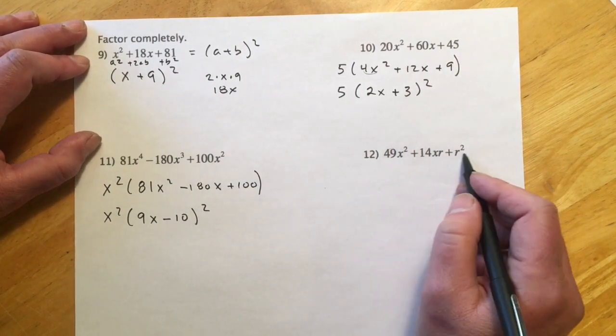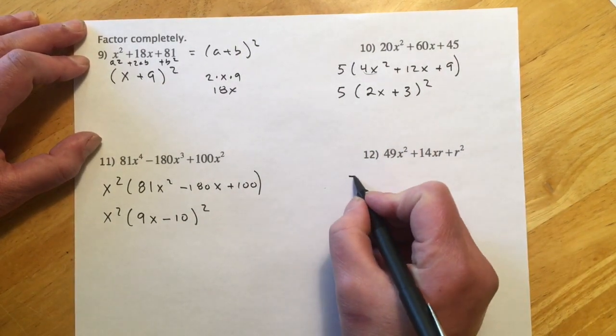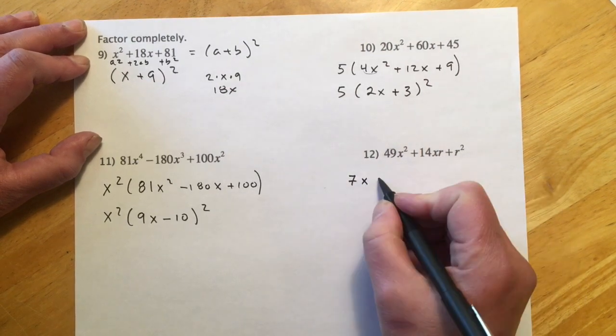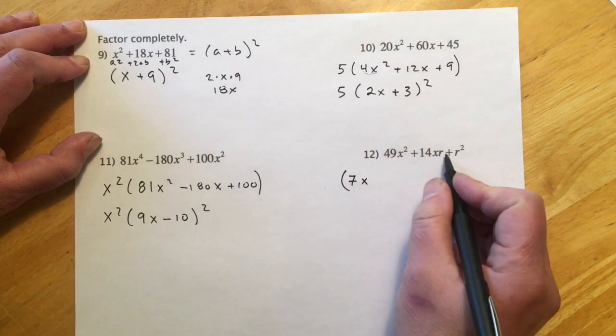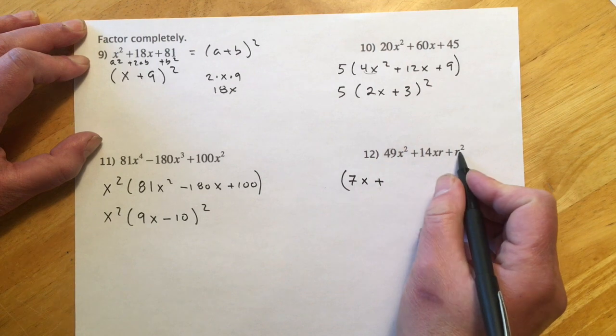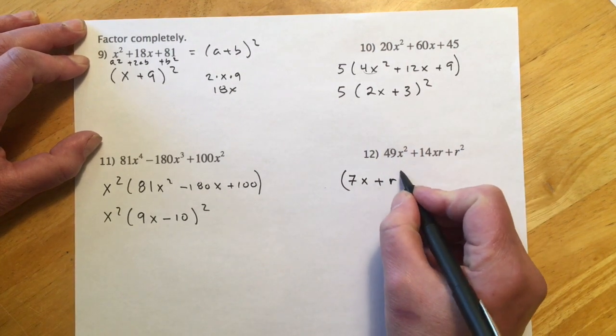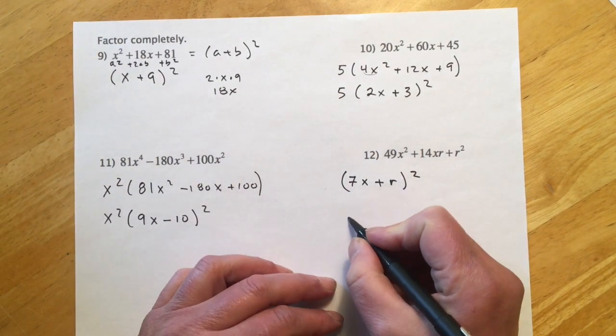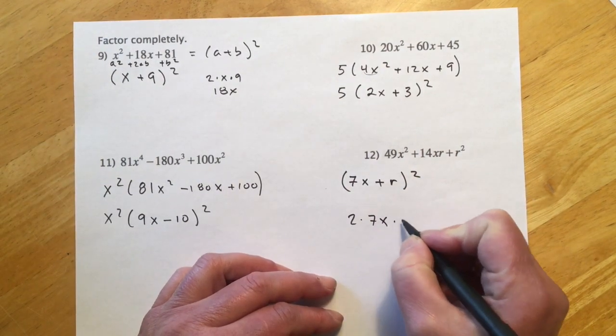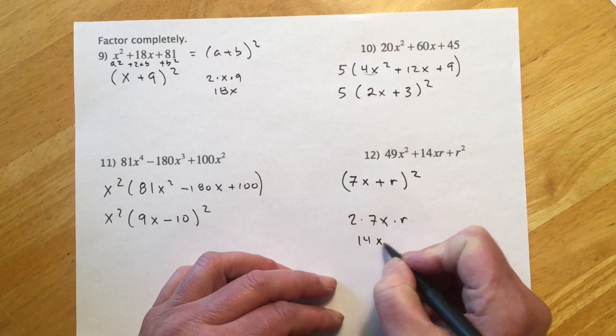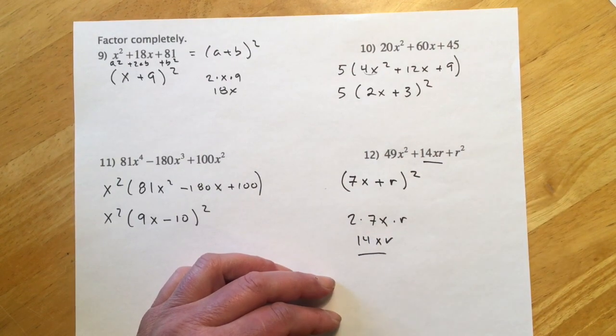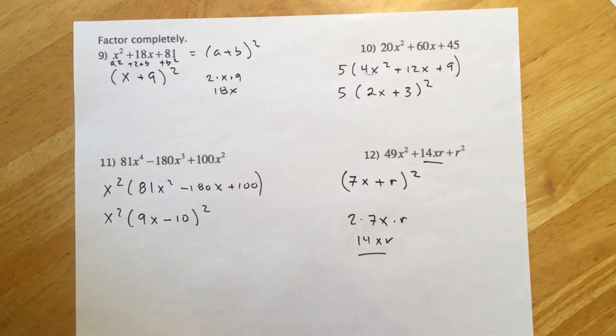Here same basic idea, just has an extra letter, and as we've seen before, it's not a big deal. 7x, this is plus, so this is plus. R is squared, so I do have squares on the ends. (7x + r)² quantity squared. If I do my check, 2 times 7x times r, there's 14xr, and that's what the middle should be.